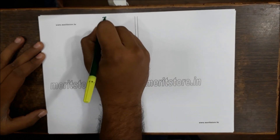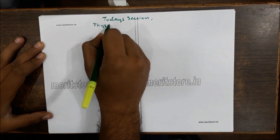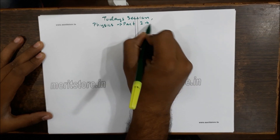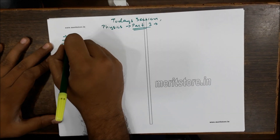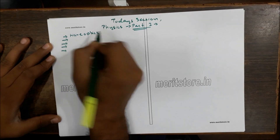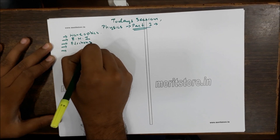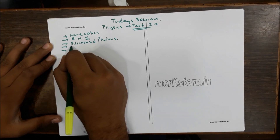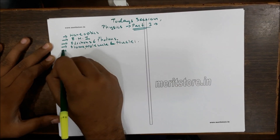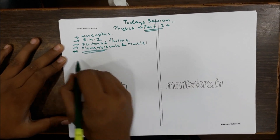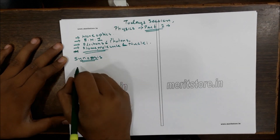Today's session deals with Physics Part 2 and the important chapters and synopsis. The first chapter, which is very important, is wave optics — multiple questions have been seen in the paper. Next is electromagnetic induction, then electrons and photons, and finally atoms, molecules, and nuclei. We will start with the synopsis of these chapters and then go for MCQs.